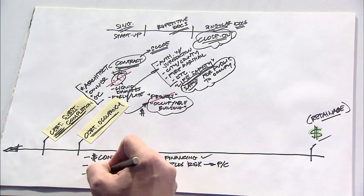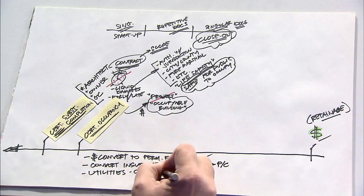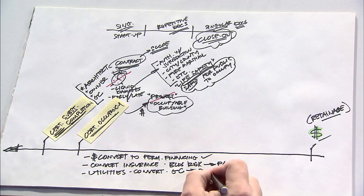Oftentimes, at this stage of the game, utilities are also converted from being in the name of the general contractor to being in the name of the owner.